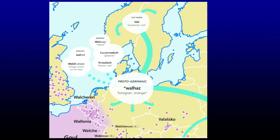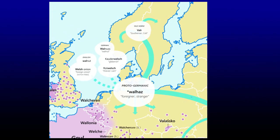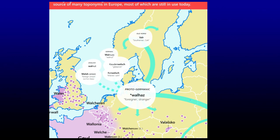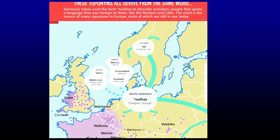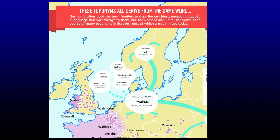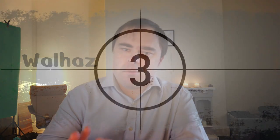I found this map on Reddit, and I hope the author, whoever it is, does not mind me using it. It's a splendid thing and it describes all the different places — many of them across Europe — which have this 'walha' root: a Germanic word for foreigner, stranger, southerner, Celt, Roman. Why does it have so many meanings, and why is it all over Europe? Well, let's begin with Wales, which is what this is about.